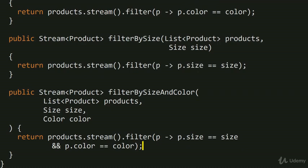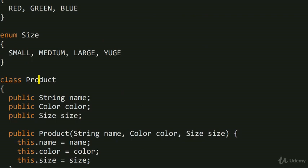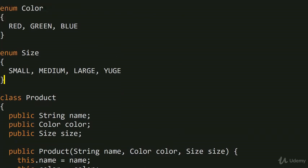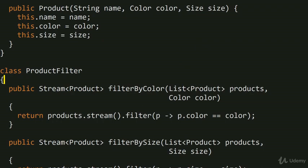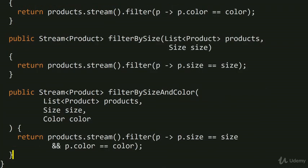The bigger problem that the Open-Close Principle tries to solve is that you shouldn't be jumping into code that's already written. You want code which is open for extension but closed for modification — a filtering mechanism which is closed to modification after it's been tested and shipped. Your clients might already be using a binary snapshot of this code, so you want to extend it from the side rather than modifying it.